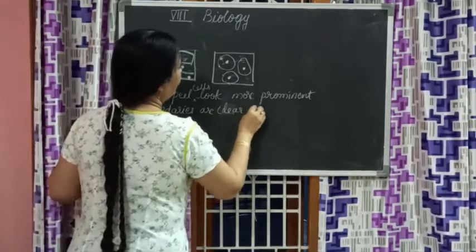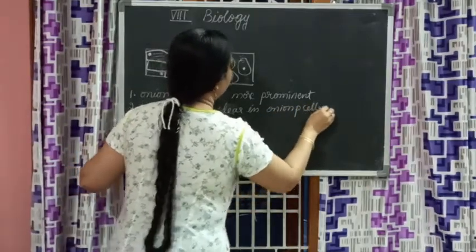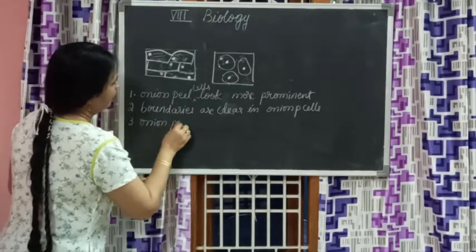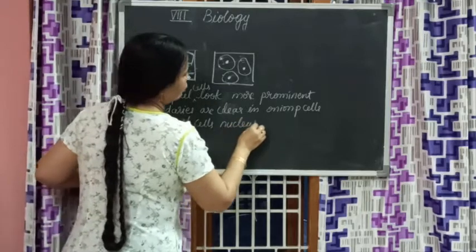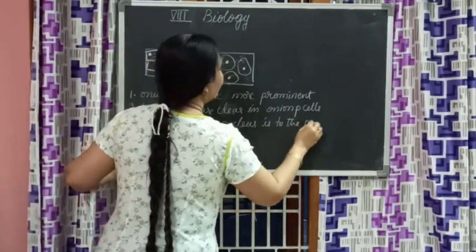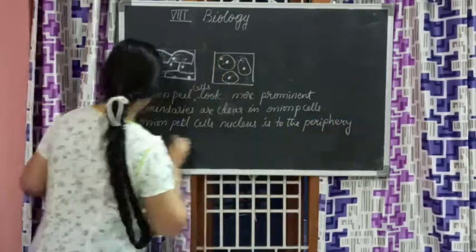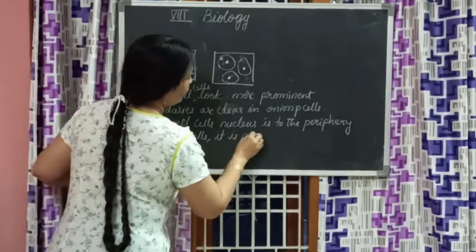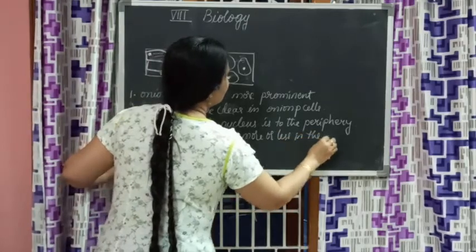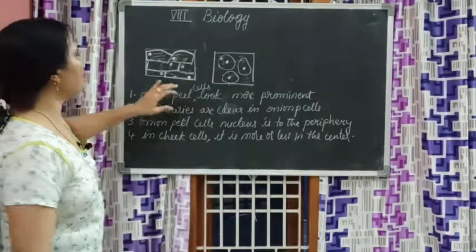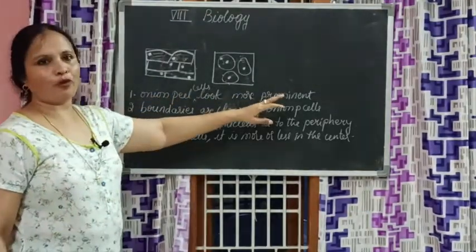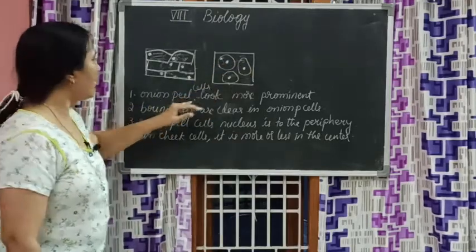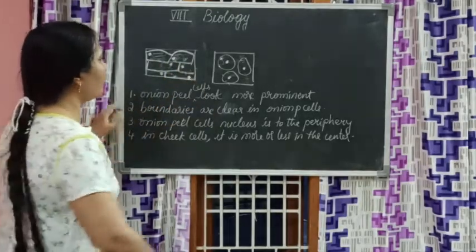In onion peel cells, the nucleus is towards the periphery. In cheek cells, the nucleus is more or less in the center. Why are onion peel cells looking more prominent? It is because of the cellular arrangement. And cheek cells are not looking as prominent because of their cellular arrangement. Boundaries are clear in onion peel cells.